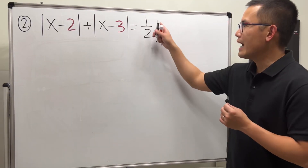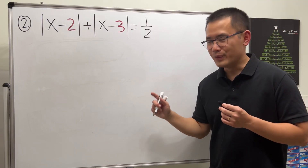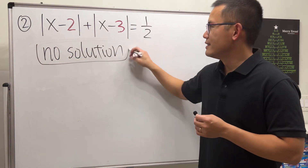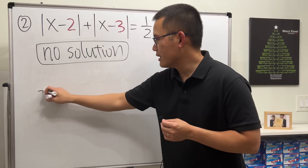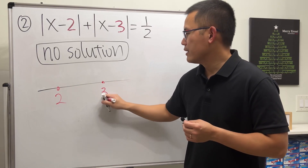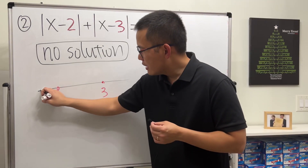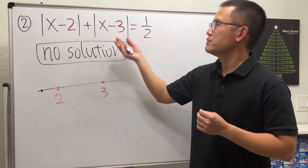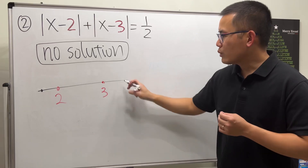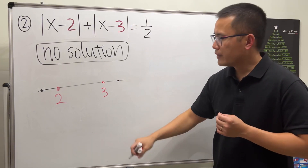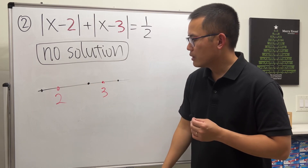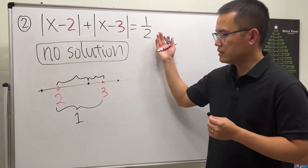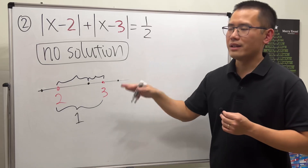Now for the second equation, we have 1/2 on the right-hand side. This equation has no solution. Looking at the picture again with 2 here and 3 here: if we put x outside to the left, the distance from x to 3 is already bigger than 1, so it can never equal 1/2. Same reason if x is to the right of 3. If x is somewhere in between, the sum of the two distances is exactly 1, not 1/2. So for any value less than 1 on the right-hand side, the equation has no solution.